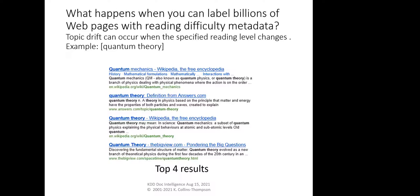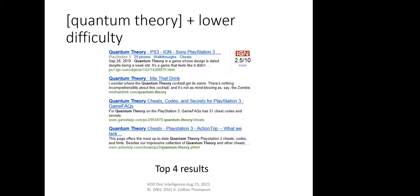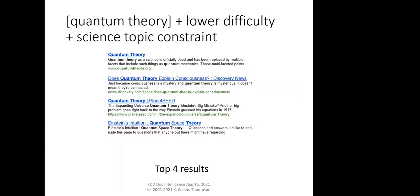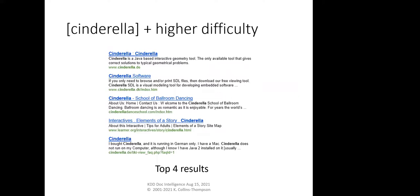If you have billions of pages with readability estimates, you can do things like search for 'quantum theory' and get typical top results. But you can also ask for really low difficulty documents — though it turns out 'quantum theory' is apparently also a game and a cocktail, so there's an interesting topic-shift disambiguation problem. You can then add back a science constraint to search for quantum theory at a lower difficulty level but focused on science — finding interesting blogs targeted at a broader audience rather than the Wikipedia article. Adding difficulty representations increases the navigation space to find appropriate content.